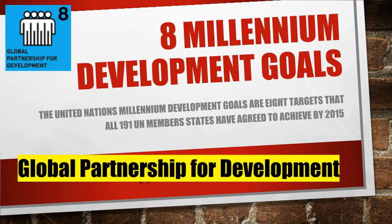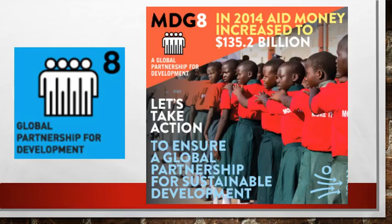Global Partnership for Development — MDG 8. In 2014, aid money increased to 135 billion. Let us act to ensure a Global Partnership for Sustainable Development.